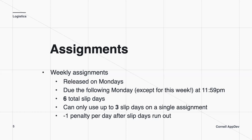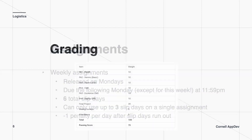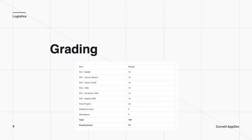You can use a maximum of three slip days per assignment. It's a minus one penalty per day after the slip days run out. So if you've used all your slip days and submit an assignment late, the max score you can get is a 9 out of 10, because assignments are out of 10 points. The grading scheme has six assignments each worth 10 points, Hack Challenge worth 30 points, weekly surveys worth 5 points, and attendance worth 5 points, for a total of 100. You need 70 points to pass.